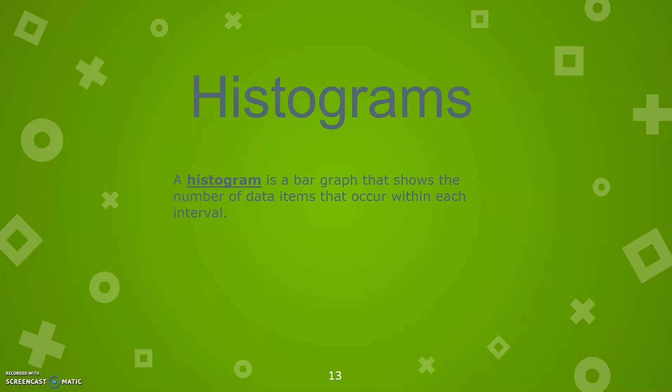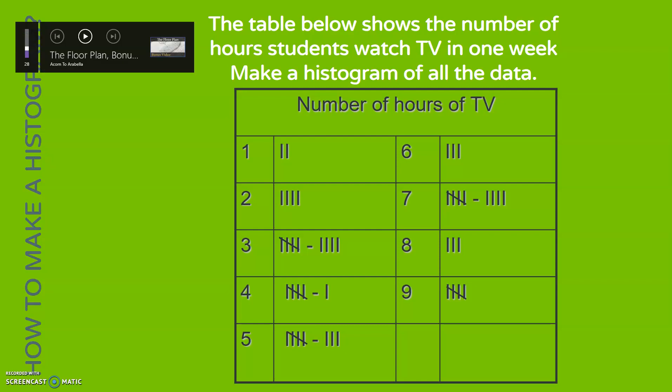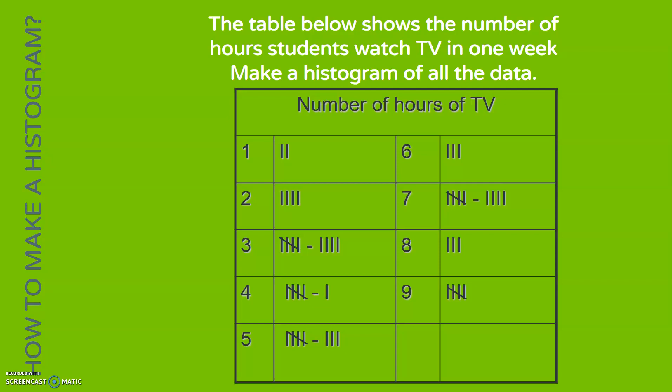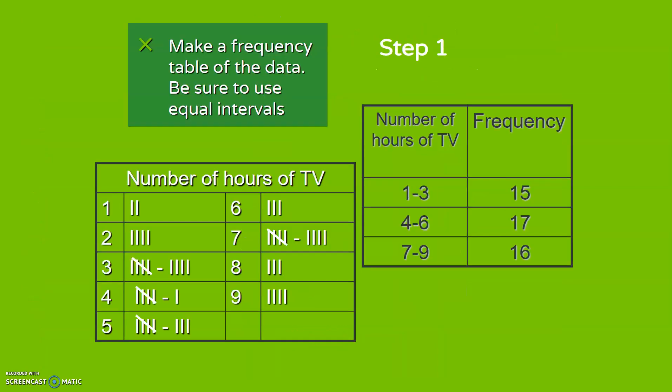Histograms are a way we look at bar graphs that show the number of data items that occur within each interval. The table below shows the number of hours students watch TV in one week. We can see the frequency table and the number of students actually watching. One through three hours is 15 people, four through six is 17 people, and seven through nine is 16 people.